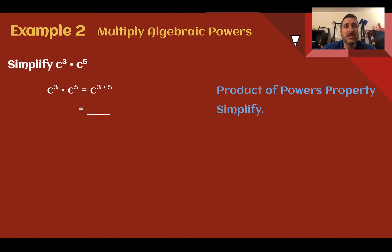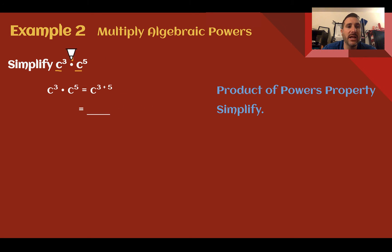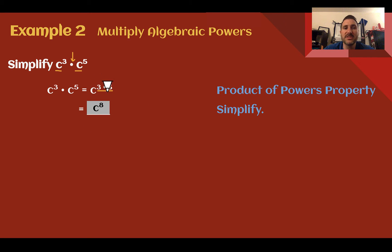Example 2: Multiply algebraic powers. Simplify c to the third times c to the fifth. We can see we have the same base, which means we can use the product of powers property. Since we're multiplying, same base — add the exponents. c to the third times c to the fifth: 3 plus 5 is 8, so c to the third times c to the fifth would be c to the eighth power.